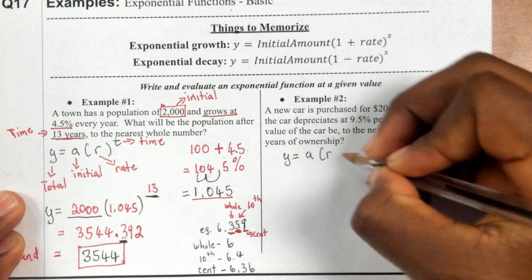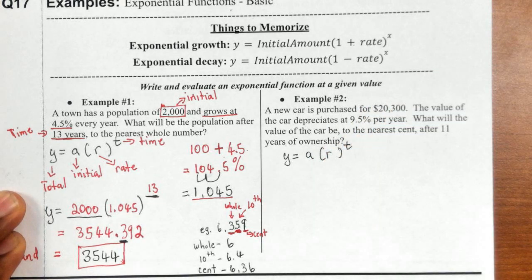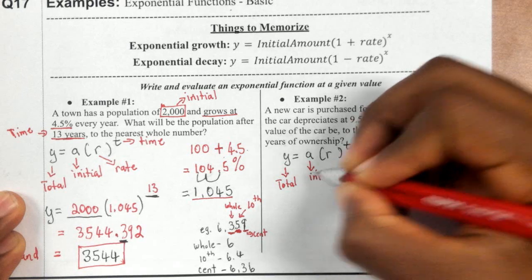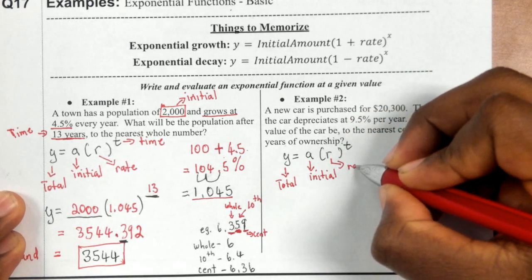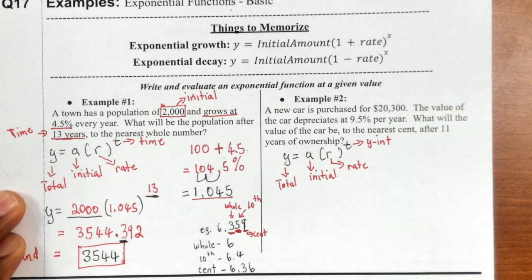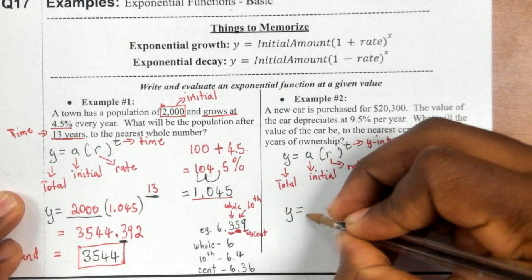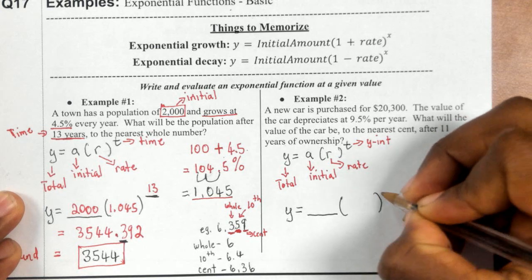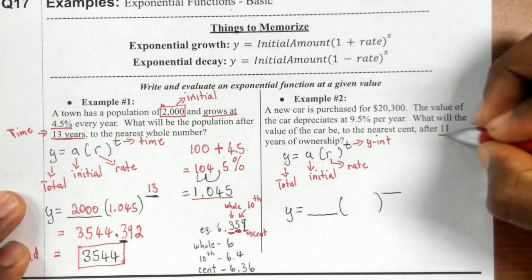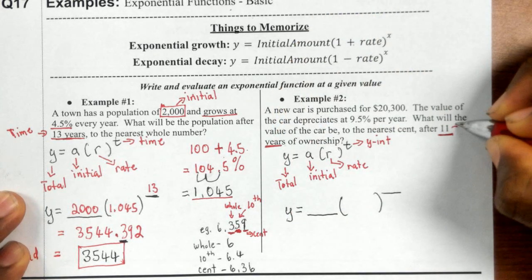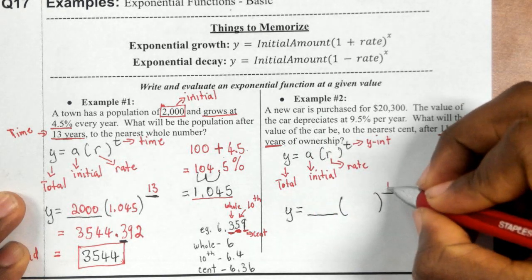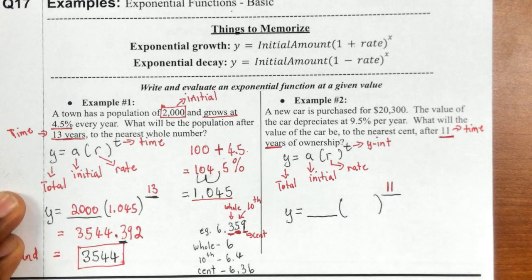We know y represents the total, a is your initial or starting value, r is your rate, and t is your time. The easiest thing to identify is your time — the 11 years, because that's the amount of time we're evaluating our car depreciating for. That represents time.